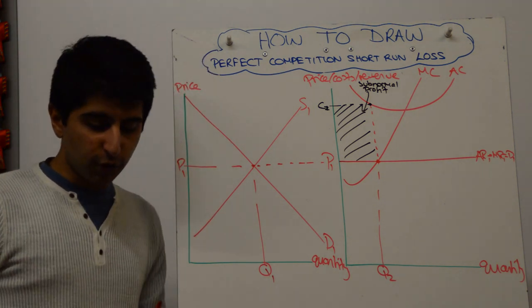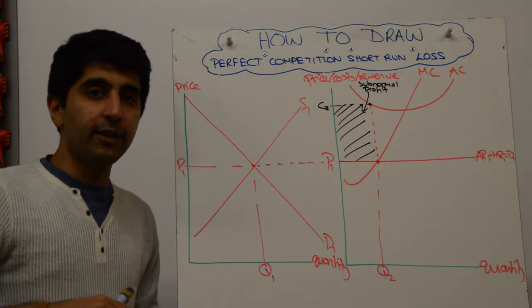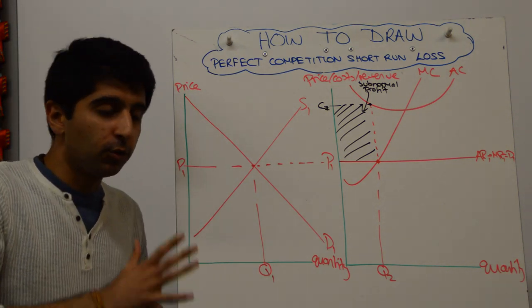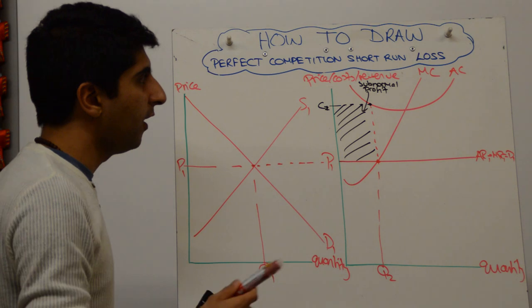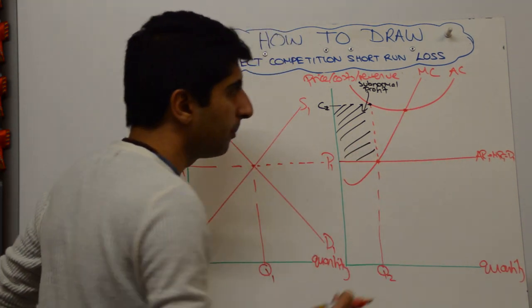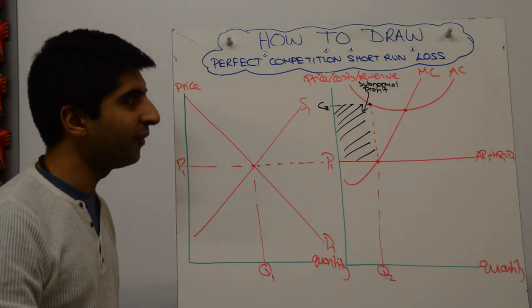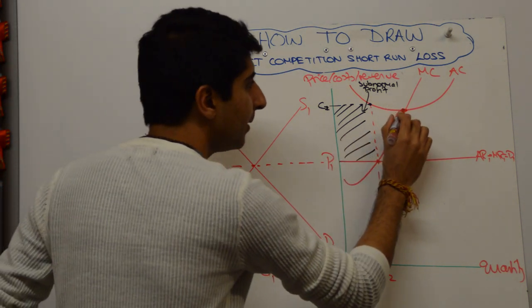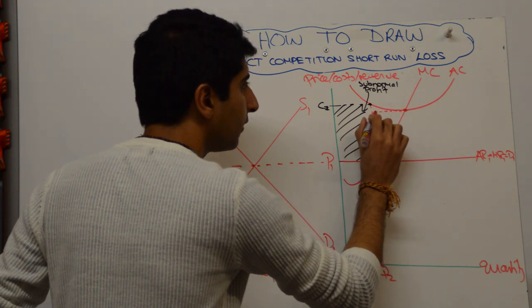What we now need to do is to correct this, because we know in the long run, this equilibrium does not hold. So again, we go backwards. We know that the long run position is going to be here, at the bottom of the AC curve. That's going to be the long run position, which will show normal profit, which will show allocative efficiency. So we know that's going to be the price. The price is going to be there. Let's call that P2.